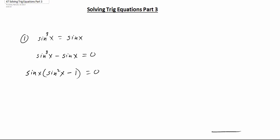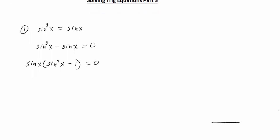This is now similar to what we had before, where we can simply take each factor and set it equal to zero. So sine x equals zero, and sine squared x minus one equals zero.